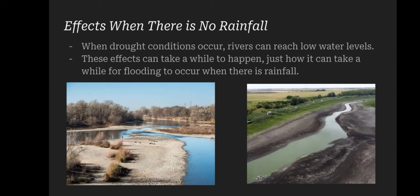On the opposite side of the spectrum, when no rainfall is occurring there can be many effects from that as well. When drought conditions are current, rivers can reach lower water levels, as you can see in these pictures below. These effects can also take a while to happen, just as it can when flooding occurs. Whether there's no rainfall or there is rainfall, the river changes will happen over a period of time — not right then and there in the moment.